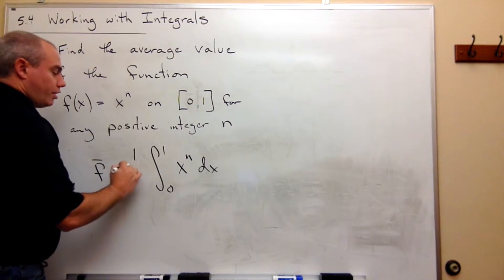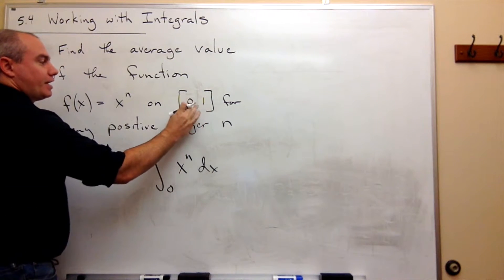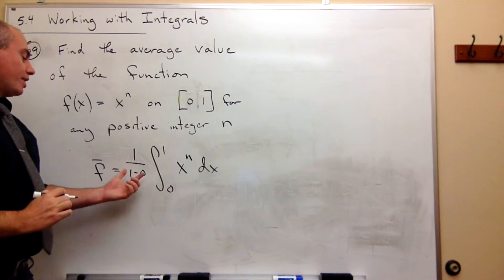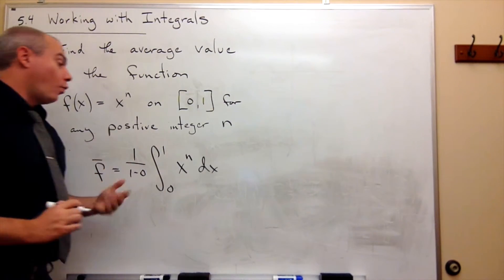In other words, I need 1 over b minus a, or 1 minus 0. So 1 over 1 minus 0, of course that's just 1.